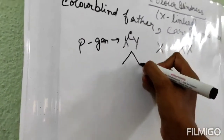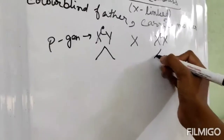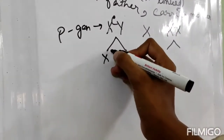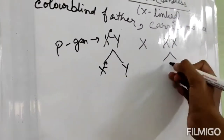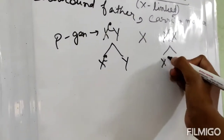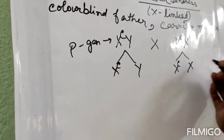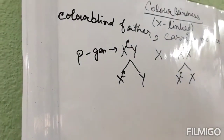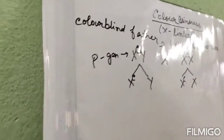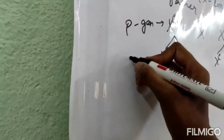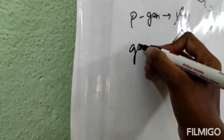Gametes will be formed next. From the father we are getting X^C and Y, and from the mother we are getting X^C and X. These are the gametes.